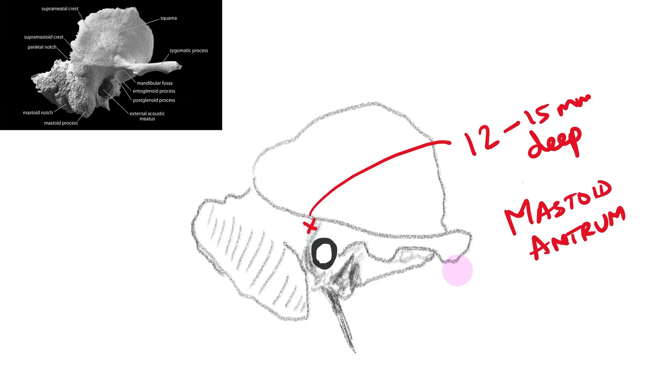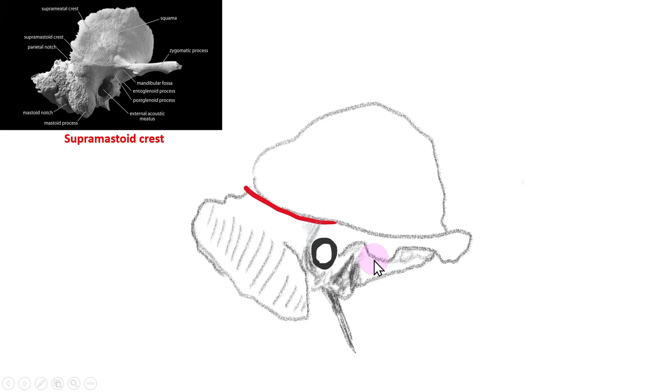Now, what's so particular about these three borders? The supramastoid crest is the location of the middle cranial fossa. The dural plate reflects at this point, so going below it minimizes risk of entering the middle cranial fossa and causing meningeal injury.